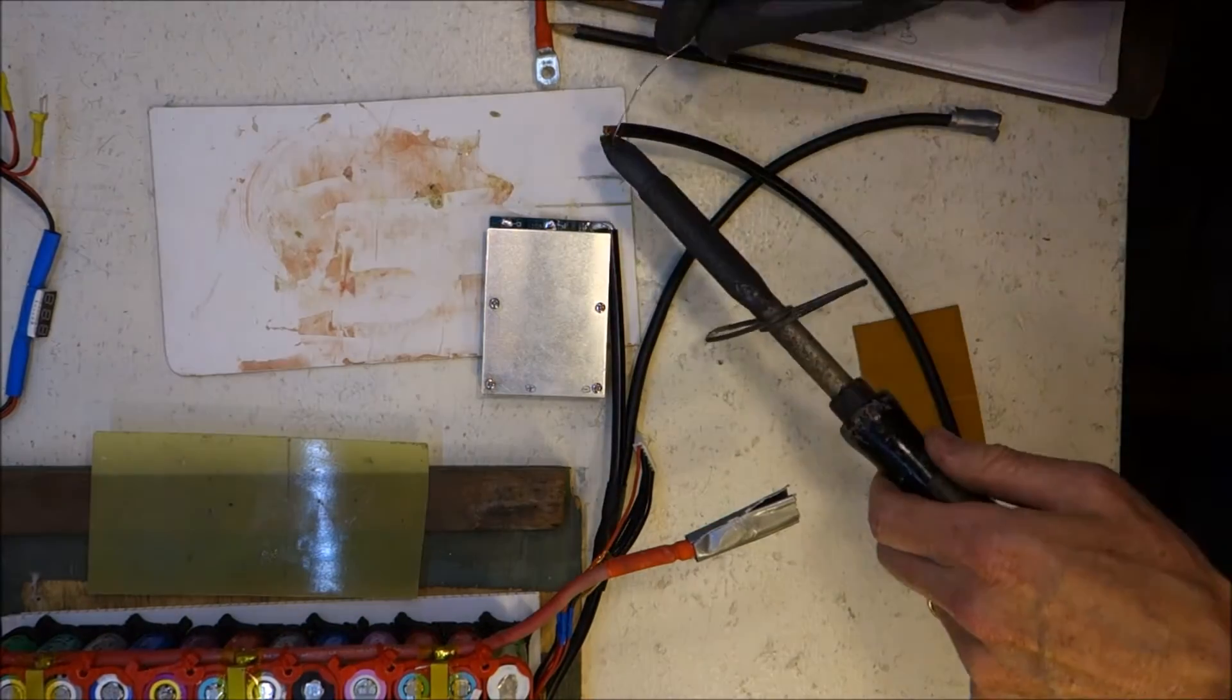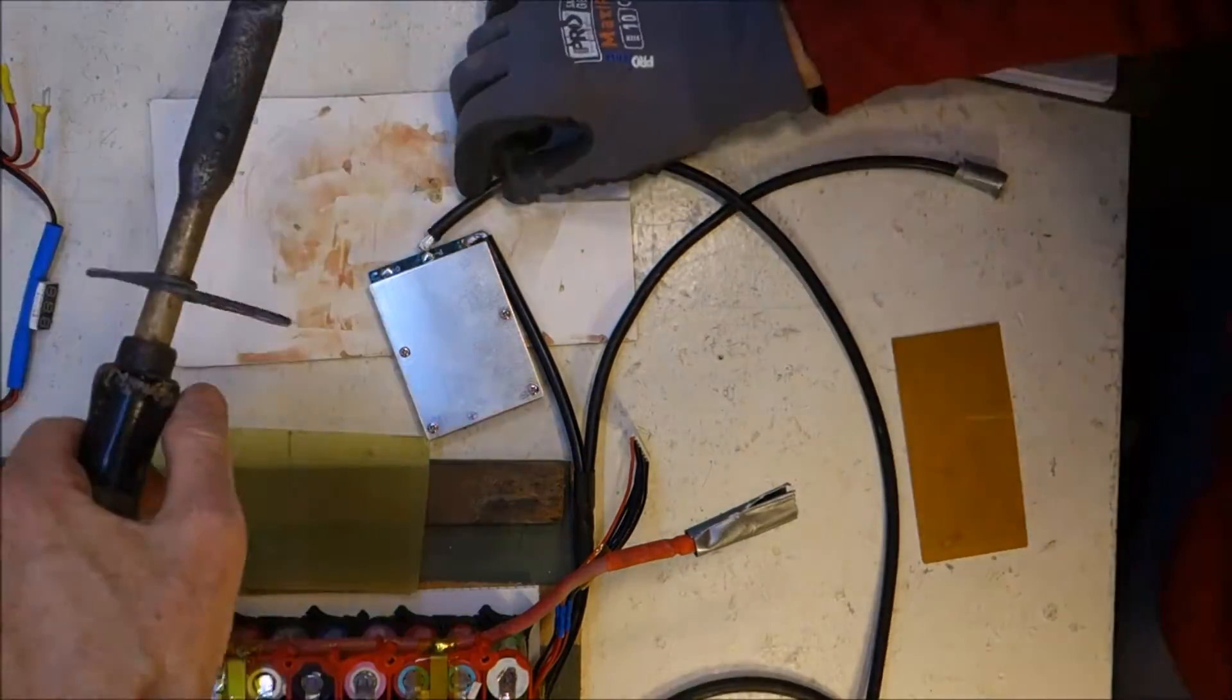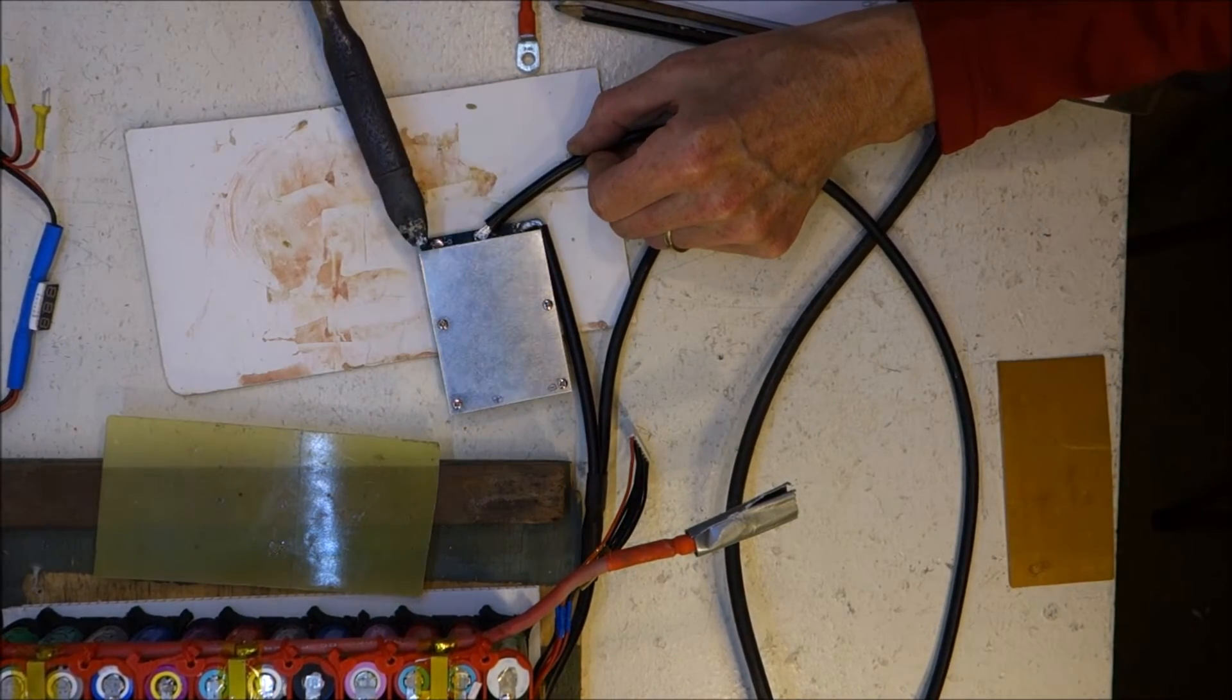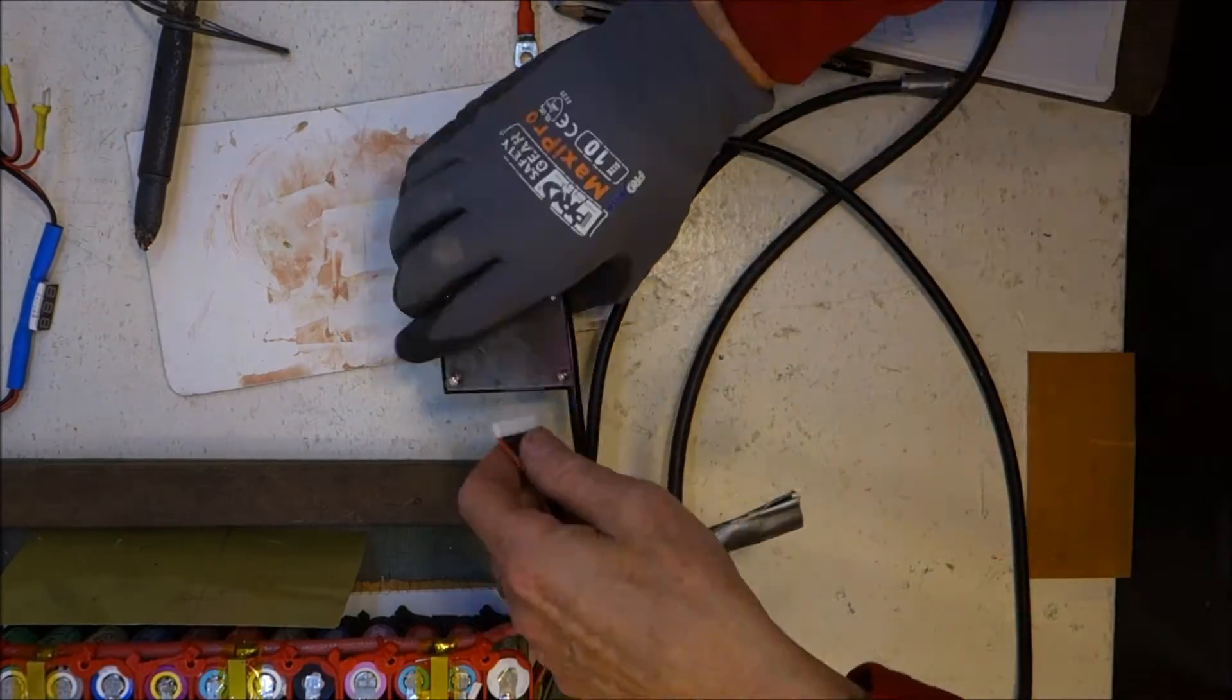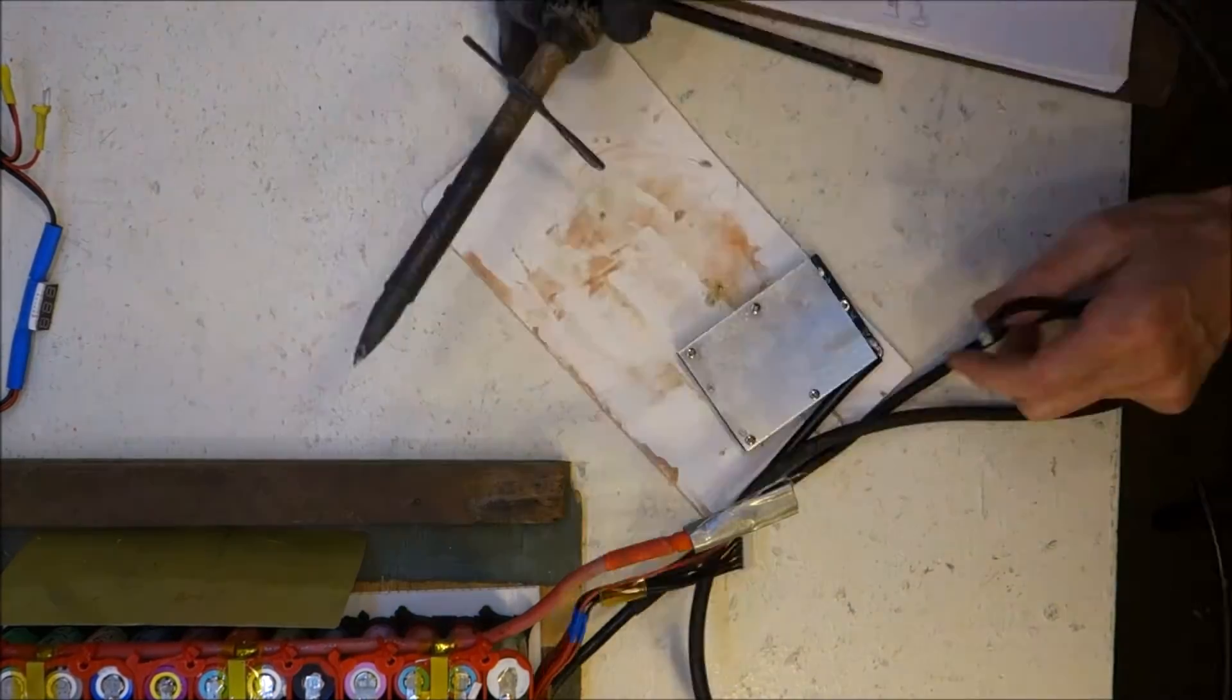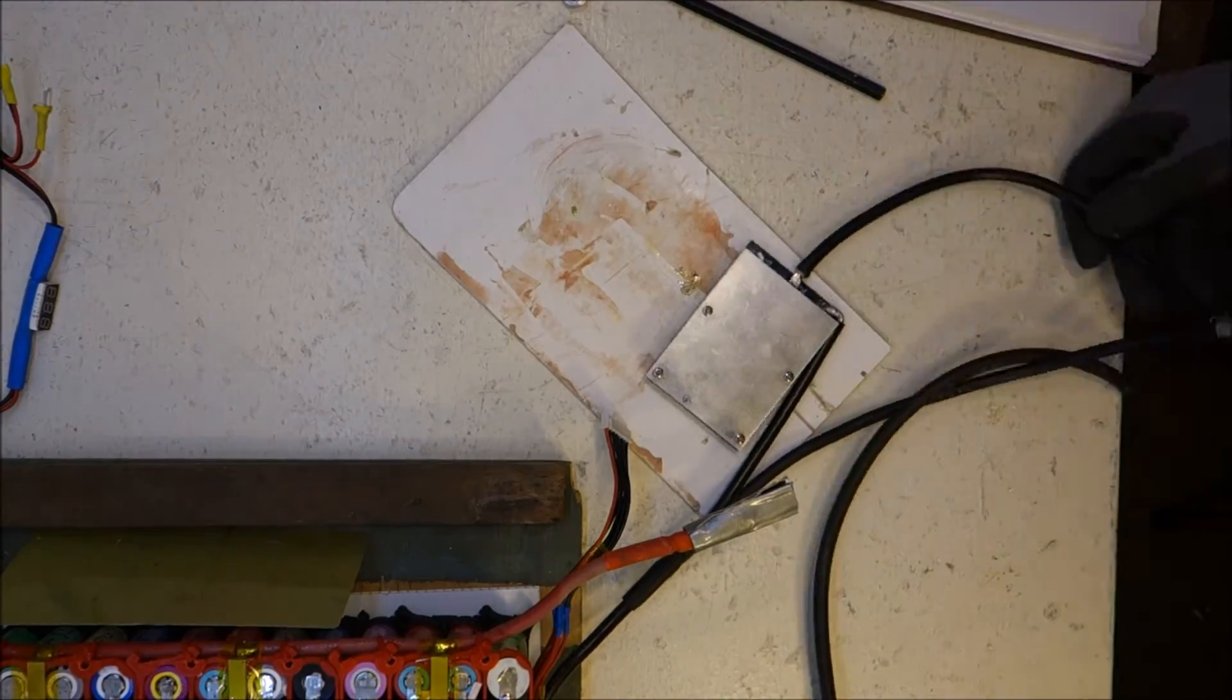Then the next wire to go on is what's known as P- which goes to your load. So the BMS is designed to cut off the negative rail of your battery. The positive rail just goes straight from the battery to your load. The negative rail gets switched off when the battery is too high or too low.